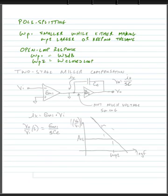And if we do this, we'll end up with a 45 degree phase margin. So looking at our compensation, we're going to use a compensation called two-stage Miller compensation.